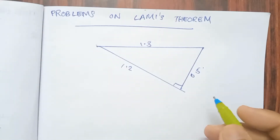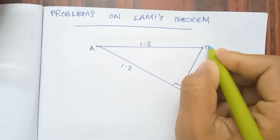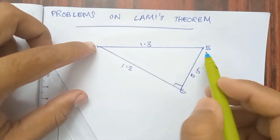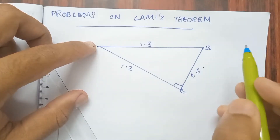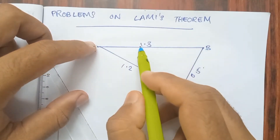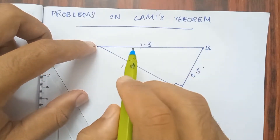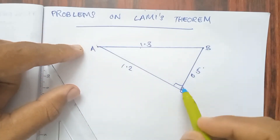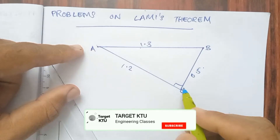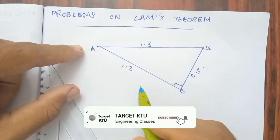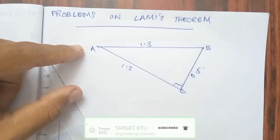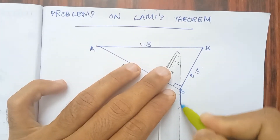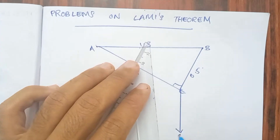This is A, B and C. A and B are 1.3 meters apart. Here is point C. AC is at a distance of 1.2 meters and BC is at a distance of 0.5 meters. The load at C is 500 N.